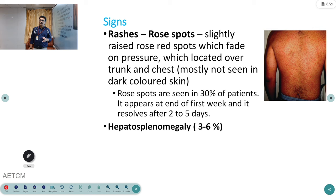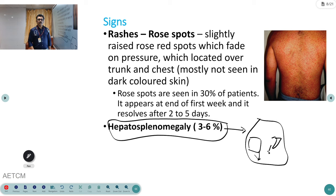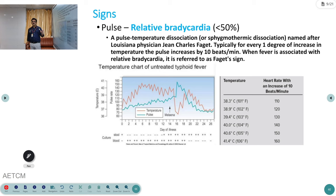Most patients have hepatosplenomegaly because the liver and spleen are part of the lymphatic system working to kill the bacteria, causing both organs to enlarge. Lymph nodes, liver, and spleen will all be enlarged in most infectious diseases — this is not exclusive to typhoid.